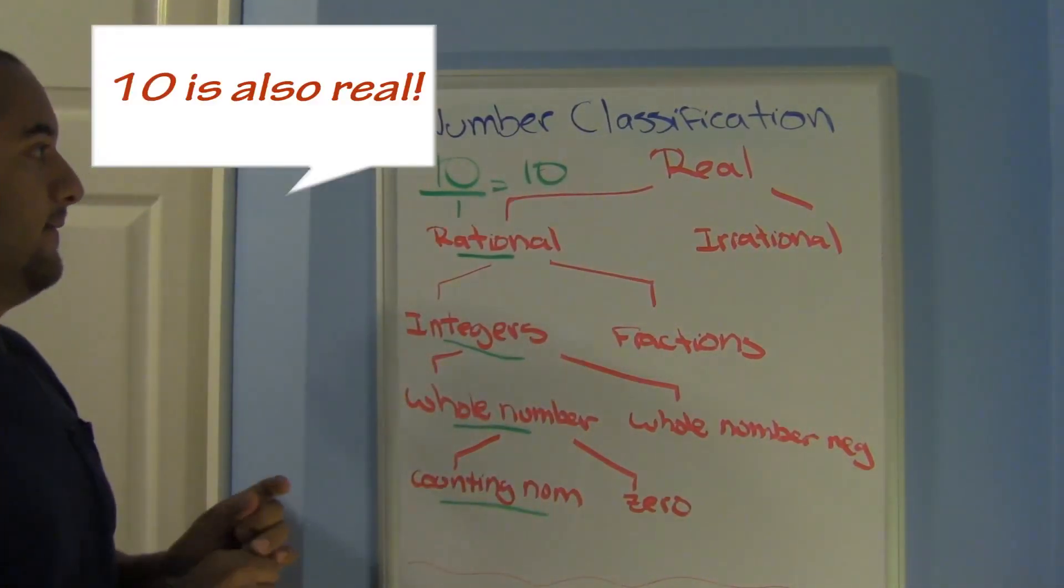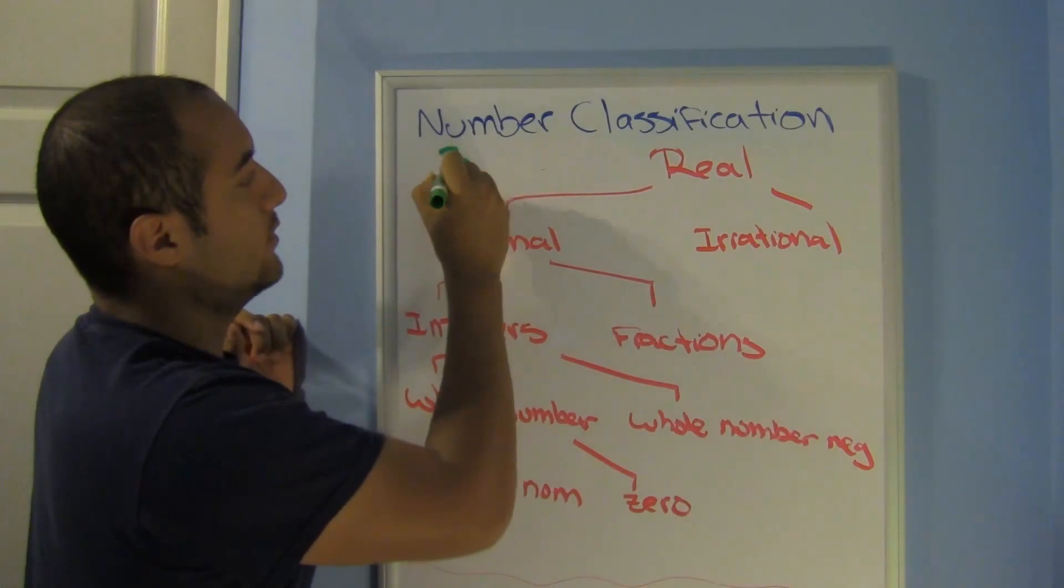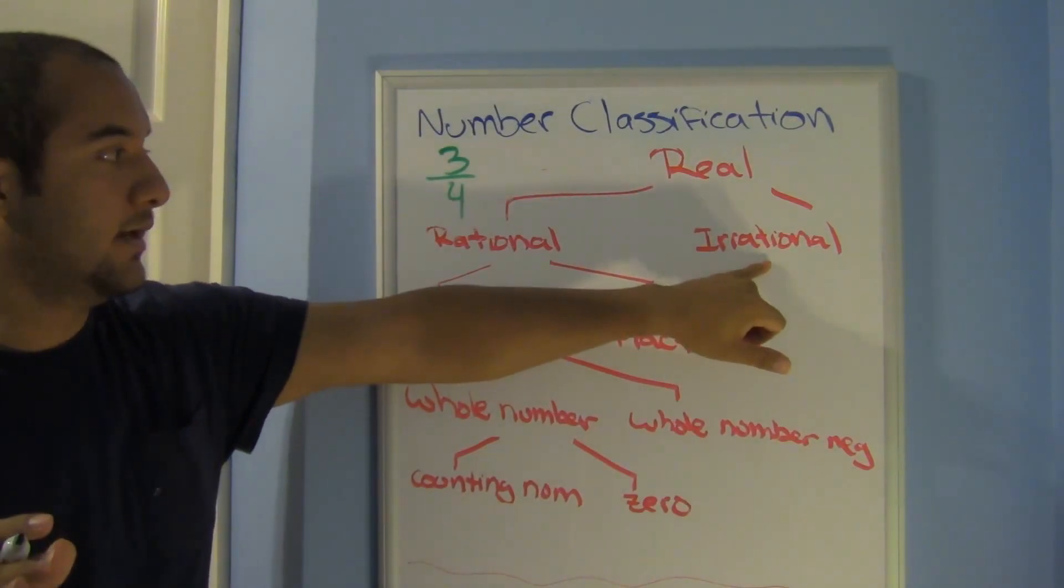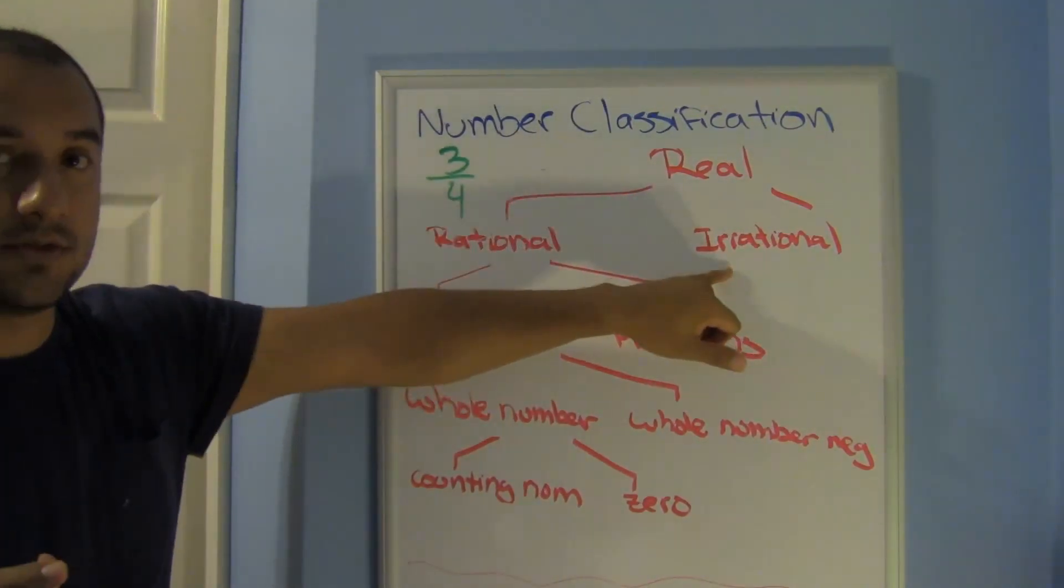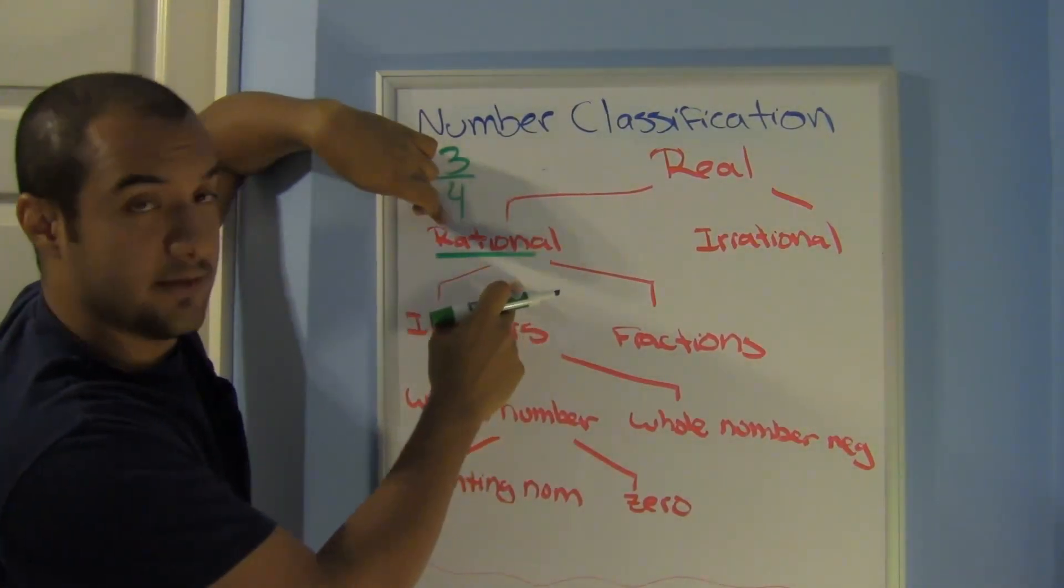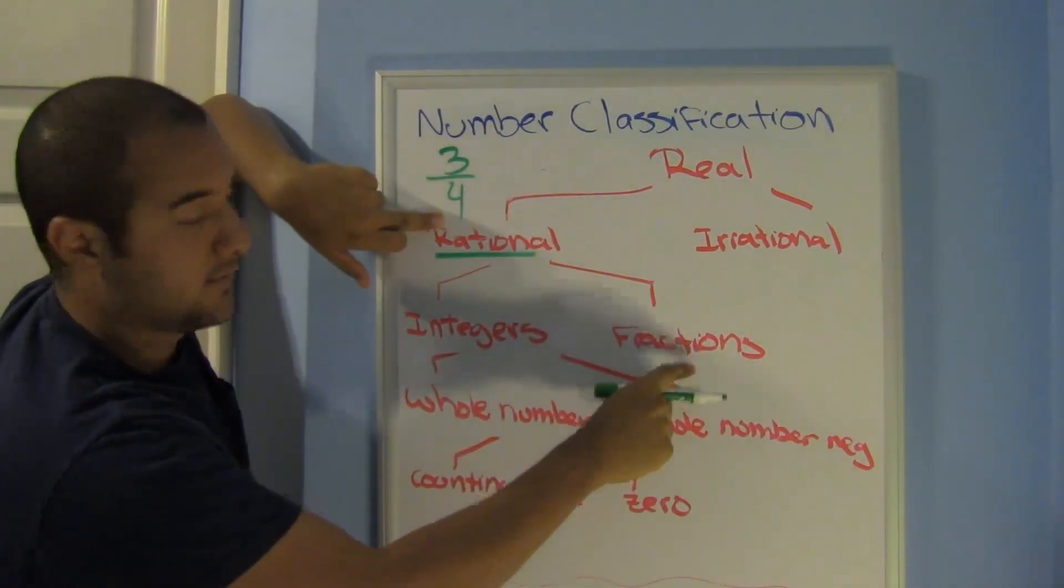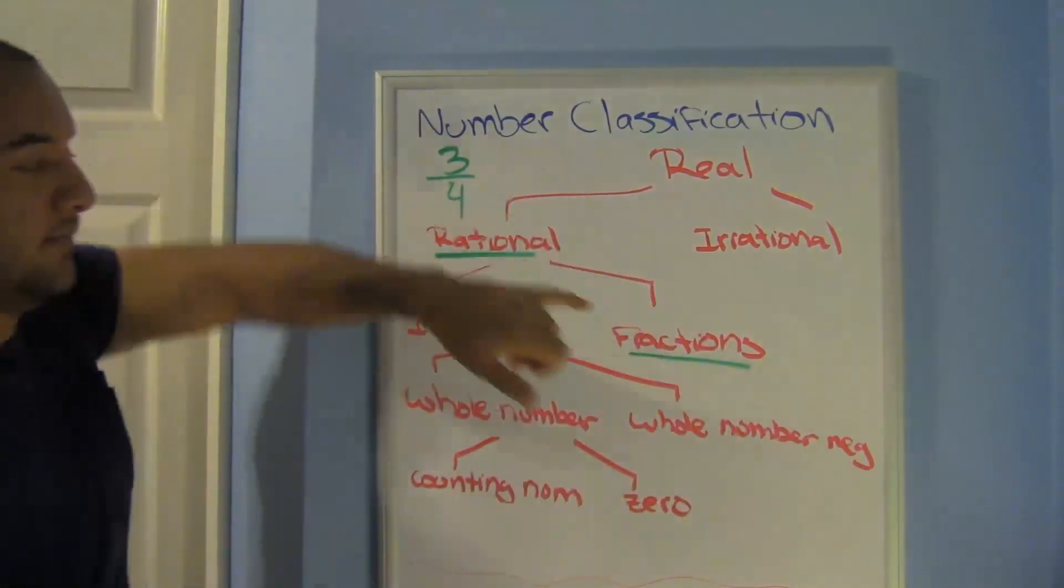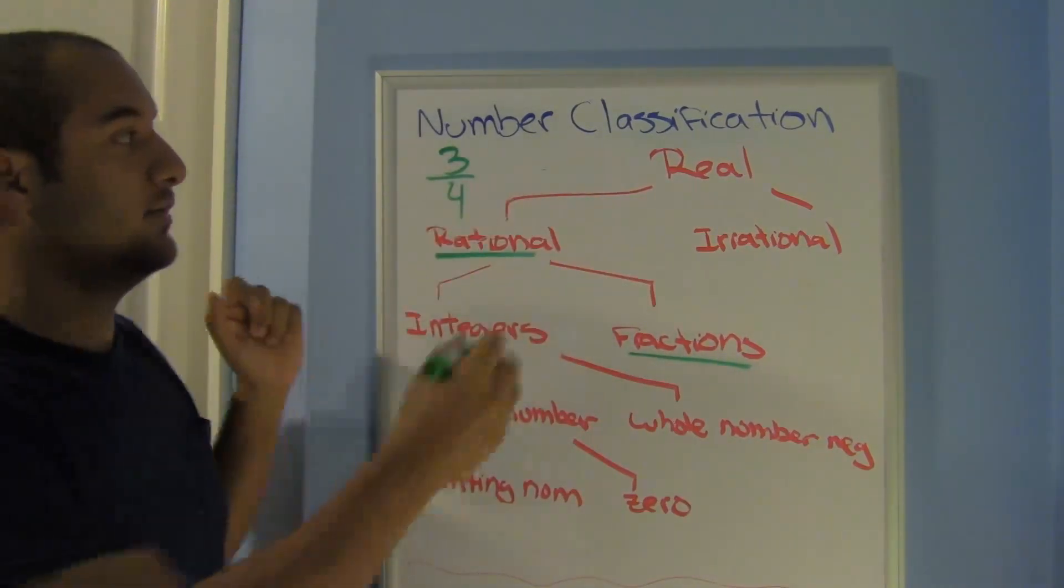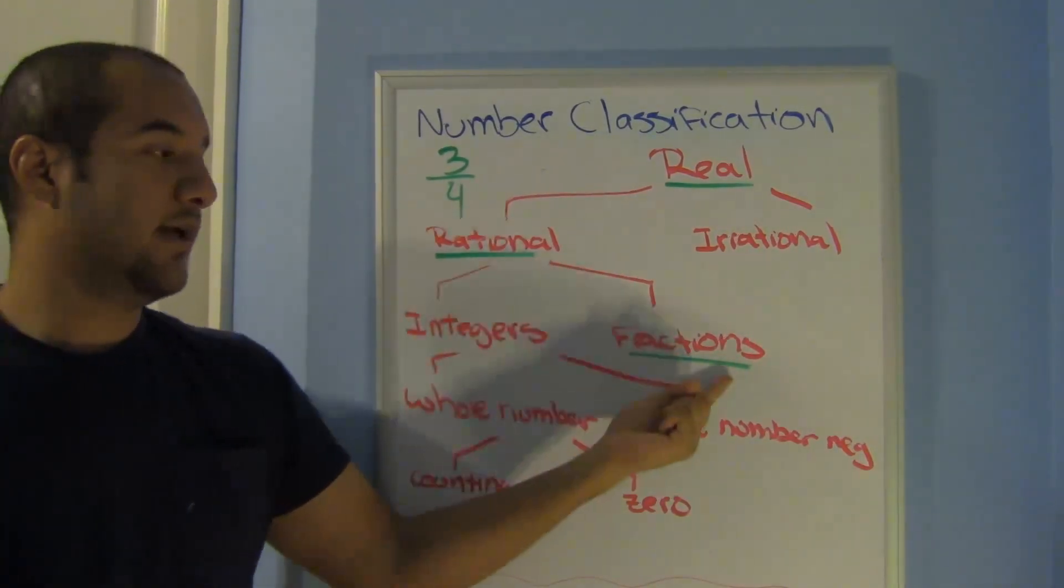Let's look at another one. What if they gave me the number 3 over 4? Start off with rational. It's a fraction. It's a ratio. So I know it's rational. Now I either get to choose the left side or the right side. Now it's not an integer. It's a fraction. So I go here, and I don't have anything below this, so that's where I stop. The number 3/4 is a real number that's also rational and a fraction.